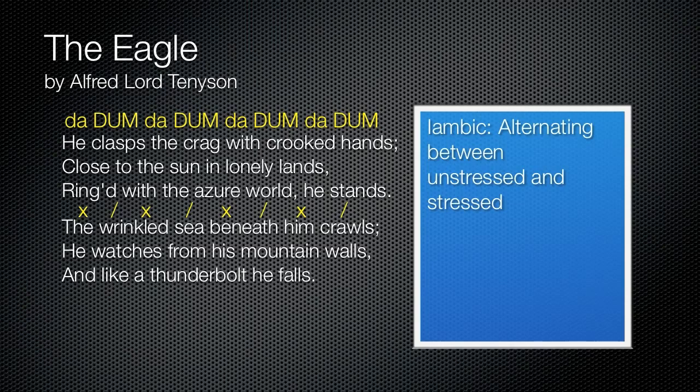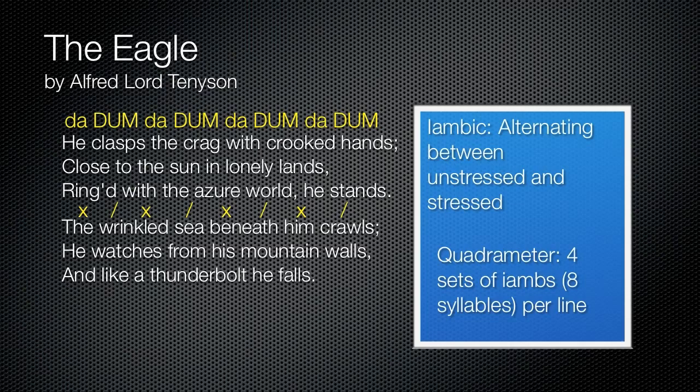Because there are four iambs in this, it's called iambic quadrameter — four sets of iambs, da-dum repeated four times, which gives eight syllables per line.